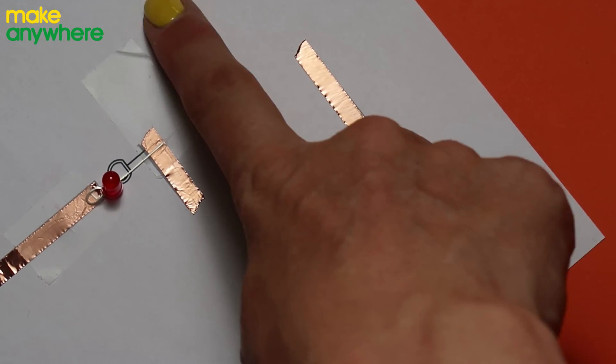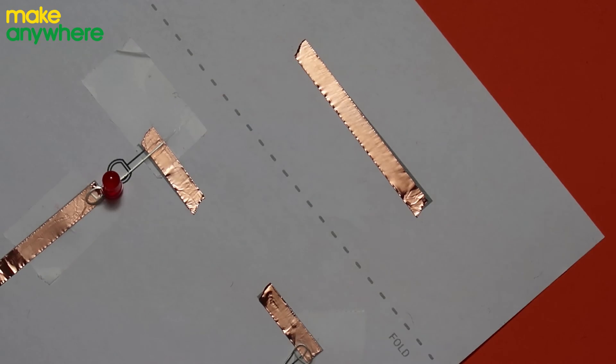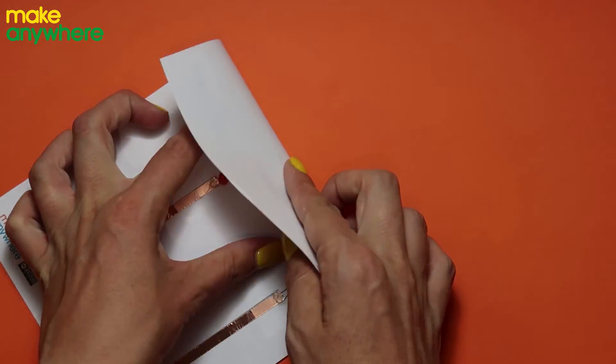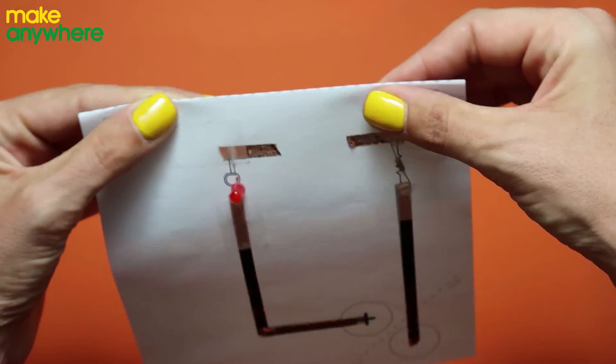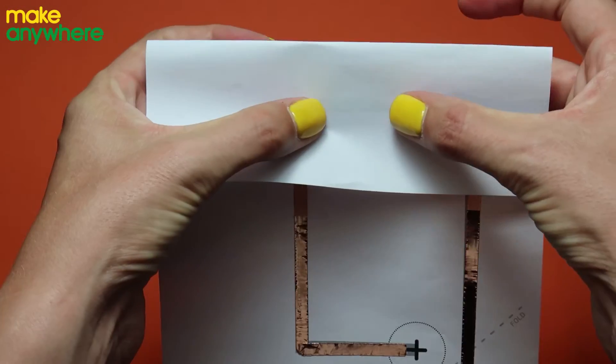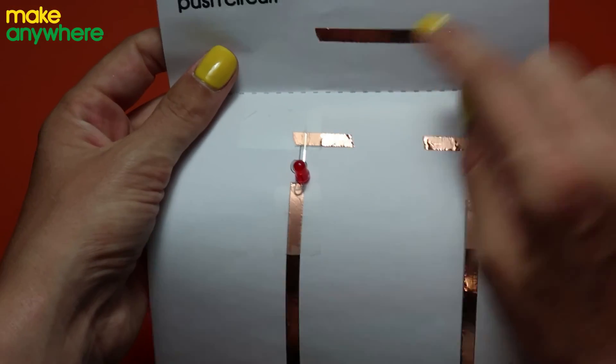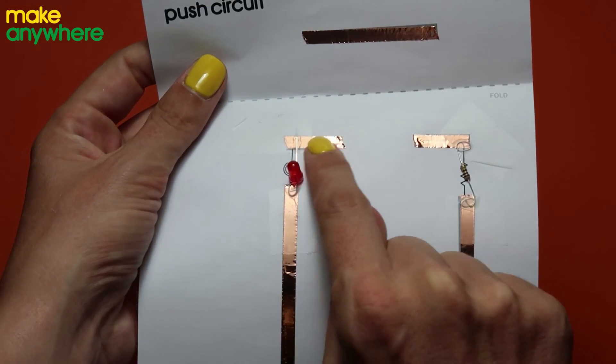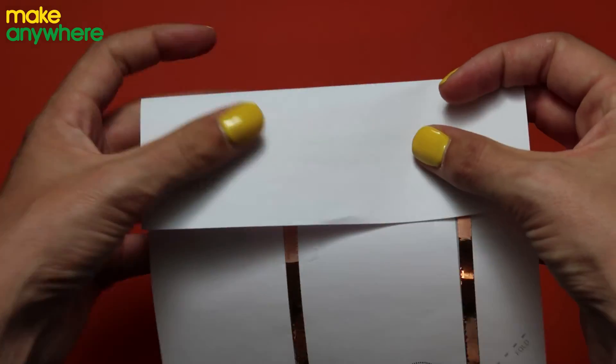Now what we're going to do is we're going to fold along this dotted line and we're checking that this piece of copper tape lines up with this. Great!